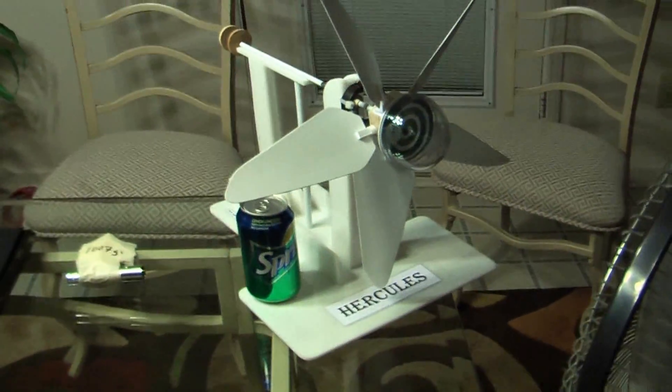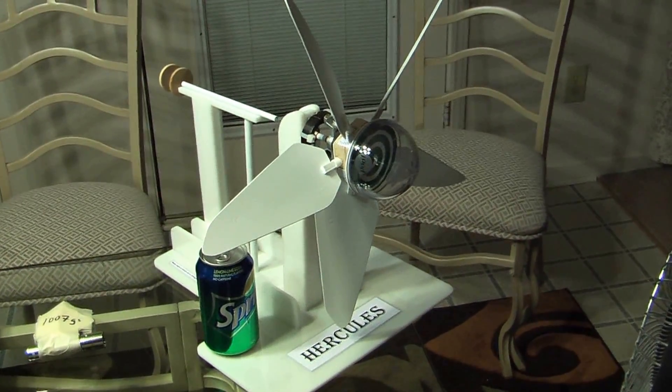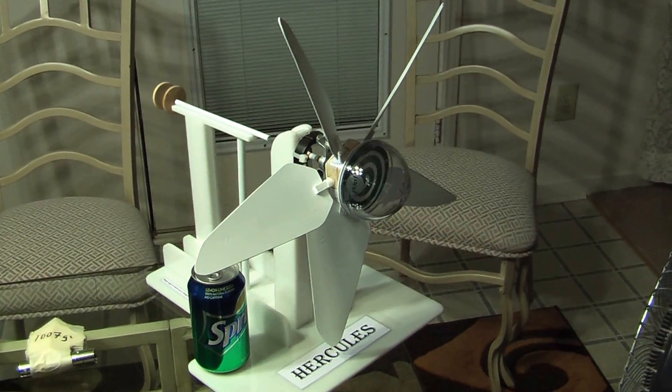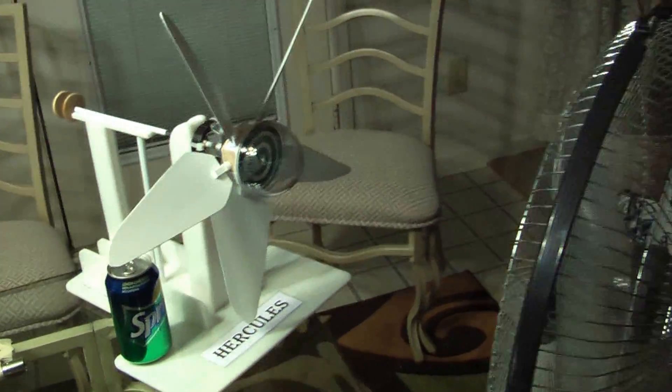So let's start with demonstrating Hercules. If you can see this, I've got a can of Sprite sitting there so that you can get an idea of just how small Hercules is. That's a can of pop, so you can tell that Hercules is not a big giant machine.